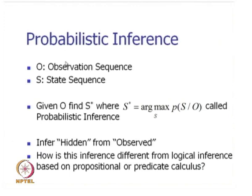A term introduced here is probabilistic inference: given the observation sequence O, the state sequence S is to be found. We need to find S* = argmax_S P(S|O), called probabilistic inference. We call this inference because we are inferring the hidden state sequence from the observed sequence. There is another kind of inference from the domain of logic — predicate calculus and propositional calculus.